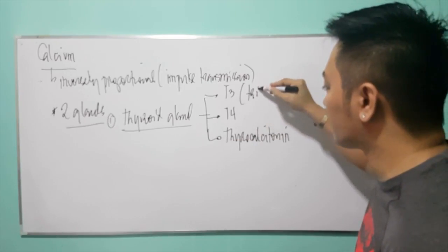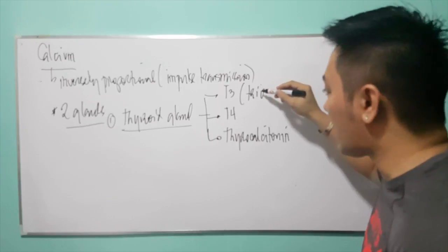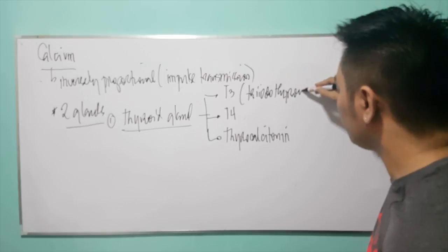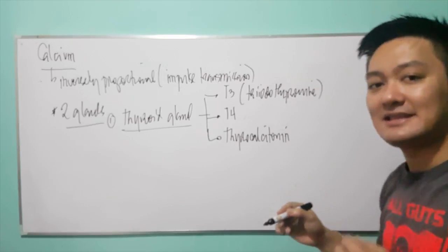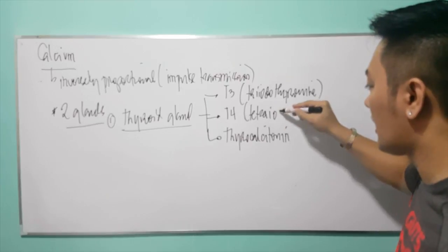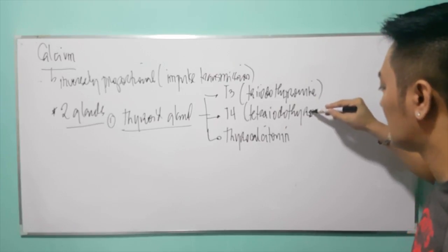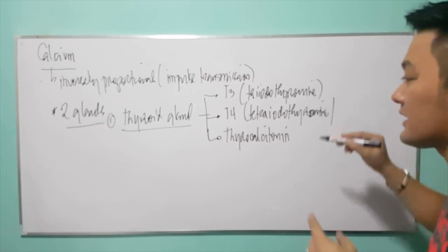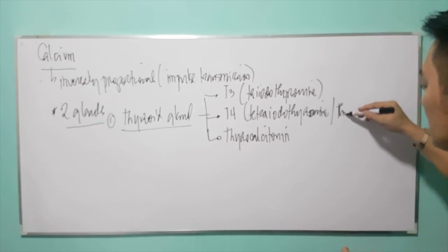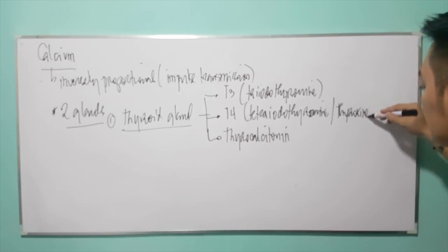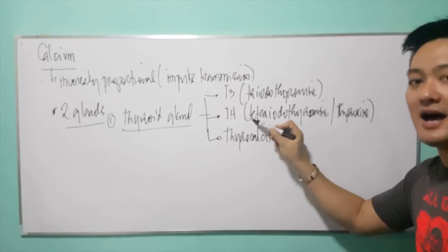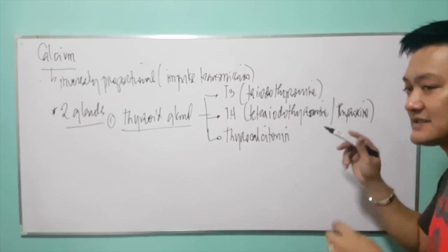T3 stands for triiodothyronine. T4 stands for tetra-iodothyronine, and another name for T4 is thyroxine. Please do not forget: T4, tetra-iodothyronine, and thyroxine are all the same.